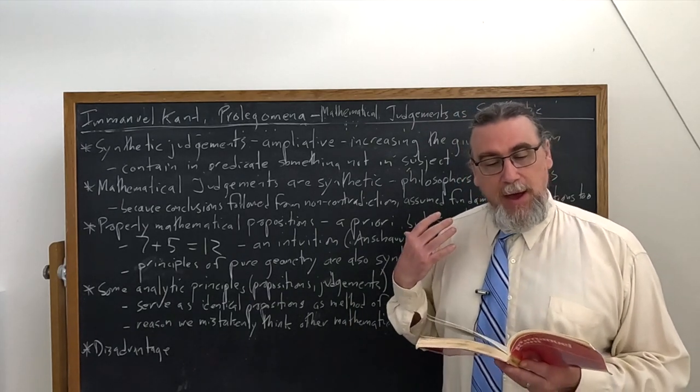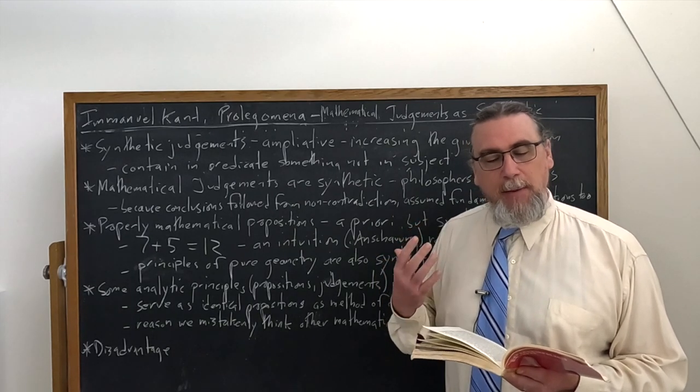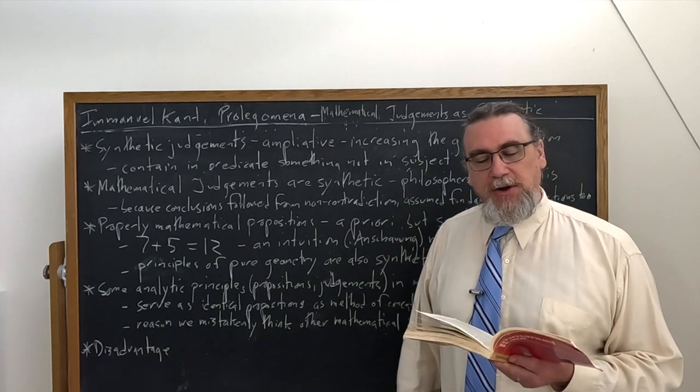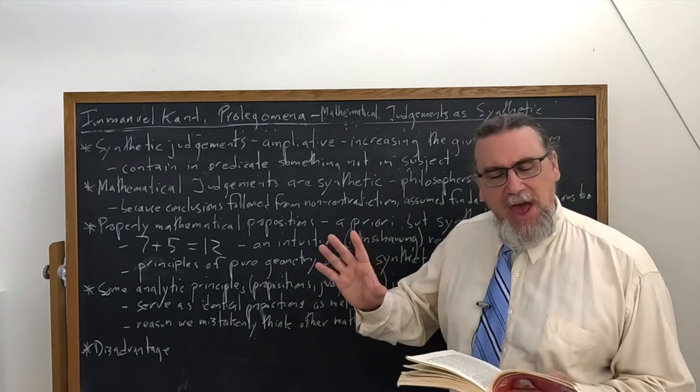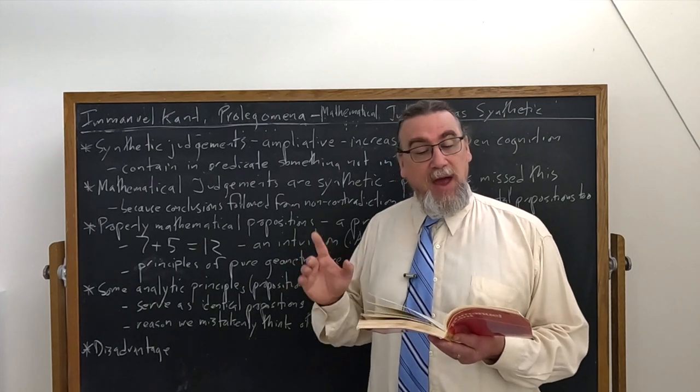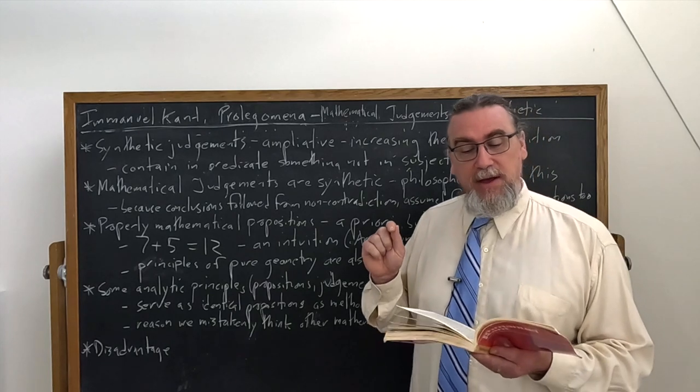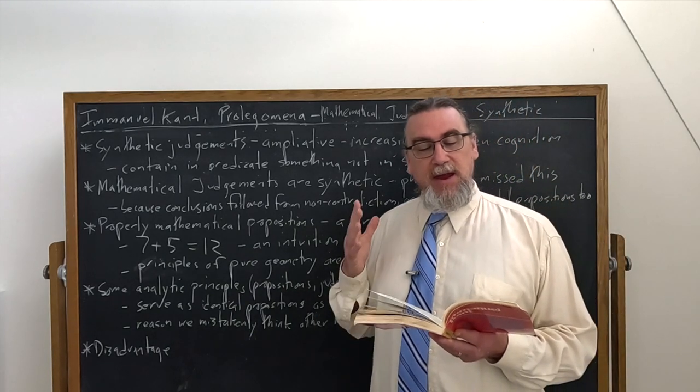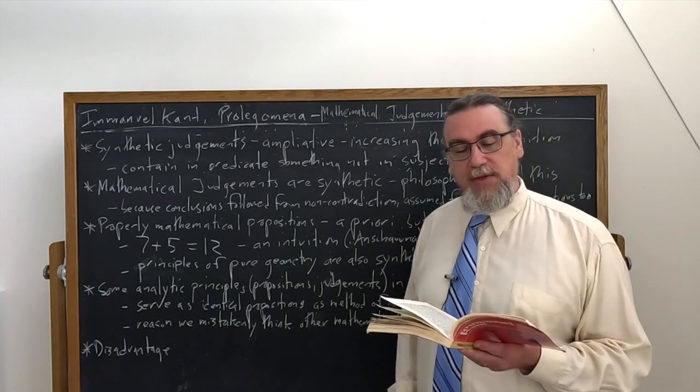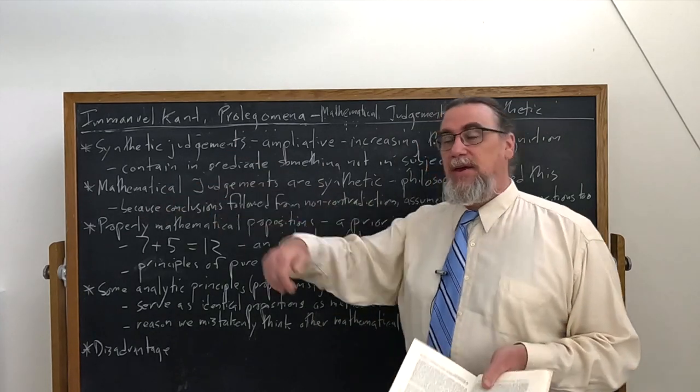He says, on closer examination, it appears that the concept of the sum seven plus five contains merely their union in a single number without it being at all thought with the particular number it is that unites them. The concept of 12 is by no means thought by merely thinking of the combination of seven and five and analyze this possible sum as we may, we may not discover 12 in the concept. We must go beyond these concepts.